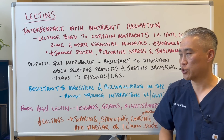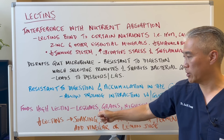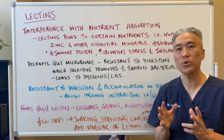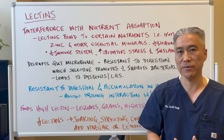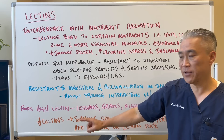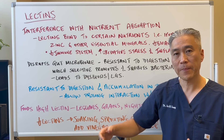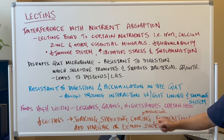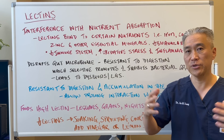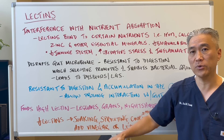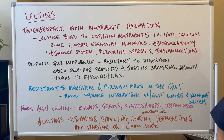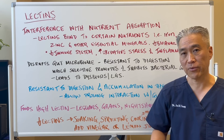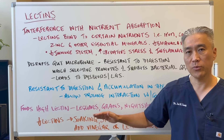Foods high in lectins include legumes, grains, nightshades, and certain seeds. To reduce the impact of lectins, you can soak nuts and seeds, do sprouting, cook foods — especially pressure cooking for 10 to 15 minutes, which will significantly reduce the lectin content. You can also ferment foods, or add vinegar and lemon juice into the cooking process to help break down the lectins when you eat them.